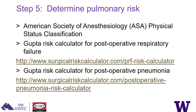An important step is also to assess someone's risk of pulmonary complications. Several tools are useful for predicting that. The first, more traditional one, is the ASA physical status classification used by anesthesiologists. There are also two tools developed by Gupta to predict the risk of postoperative respiratory failure and postoperative pneumonia, with calculators that include variables such as age, type of surgery, and duration of surgery.